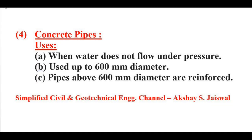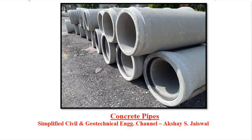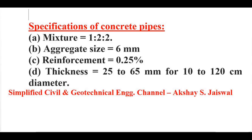Concrete pipes are used when water does not flow under pressure. Concrete pipes are used up to 600 mm diameter, and pipes above 600 mm diameter are reinforced. Specifications of concrete pipes: mixture is 1:2:2, aggregate size used is 6 mm, reinforcement is 0.25%, and thickness is 25 to 65 mm for 10 to 120 cm diameter pipes.